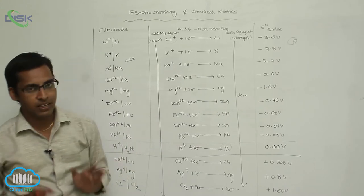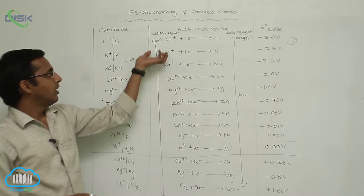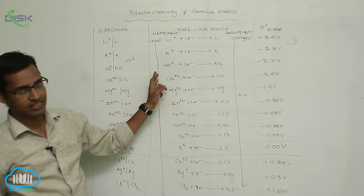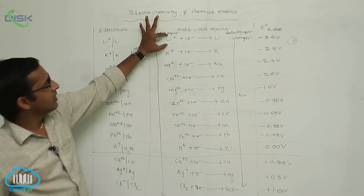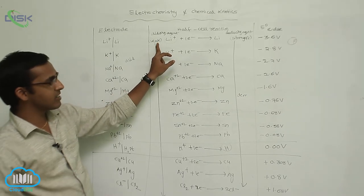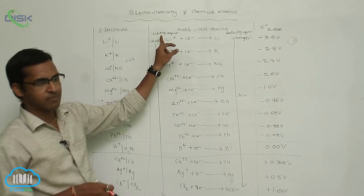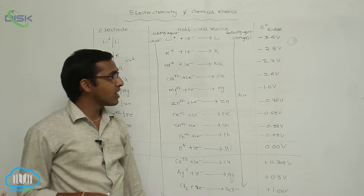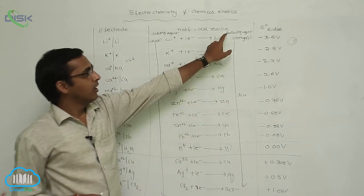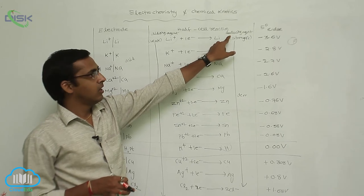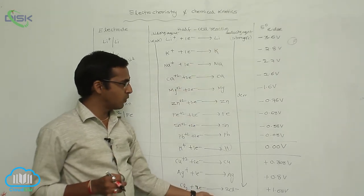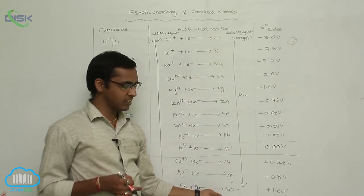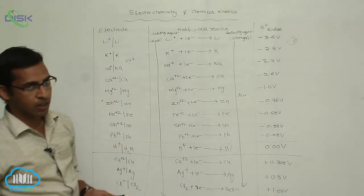This is the electrochemical series — the arrangement of metals by decreasing tendency of electrons. In the electrochemical series, lithium is the weakest oxidizing agent, meaning its reduction potential value is very less. The strongest oxidizing agent is fluorine. The strongest reducing agent is lithium, while the weak reducing agent is at the other end of the series.